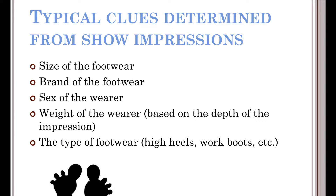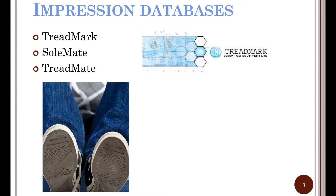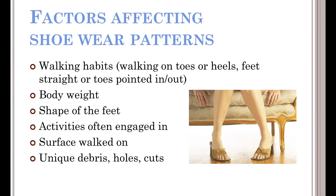These are a few things we can tell from shoe impressions — that should say shoe and not show, so I apologize. We can determine the size of the footwear, the brand, sometimes the sex of the wearer, the weight of the wearer based on how deep the impression goes, and the type of footwear such as high heels, boots, sneakers, or flip flops. Just like other forms of evidence, there are databases that track impression evidence: Treadmark, Soulmate, and Treadmate all deal with shoe impressions, and some deal with tire impressions as well.